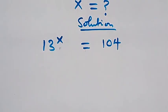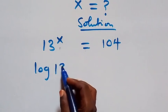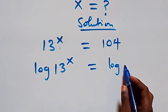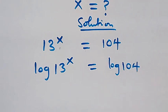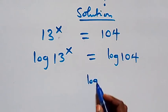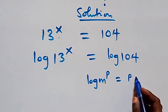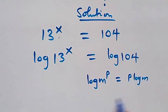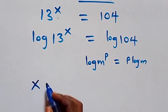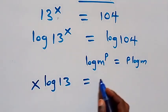From here we take the log on both sides, then we have log 13 raised to power x equals to log 104. Here we apply the power law of logarithm: log m raised to power p equals p times log m. Since the power is x, this becomes x log 13 equals to log 104.